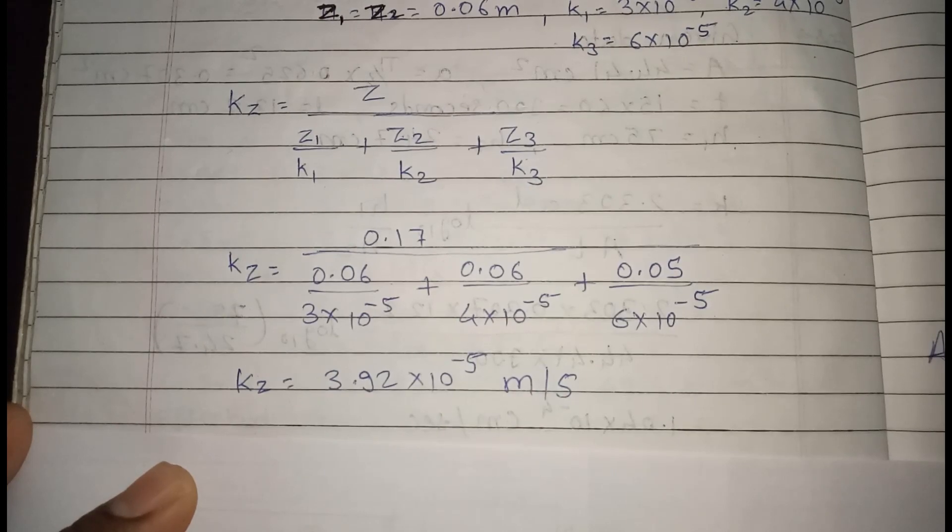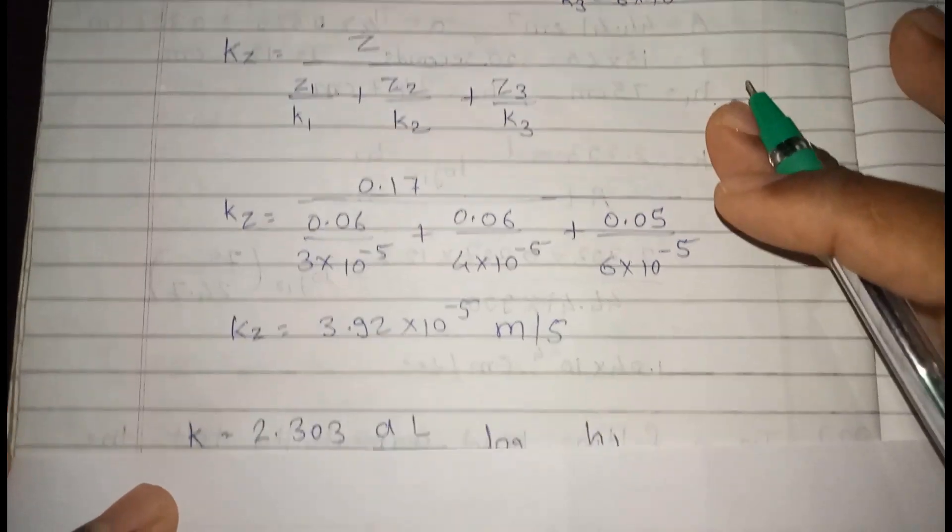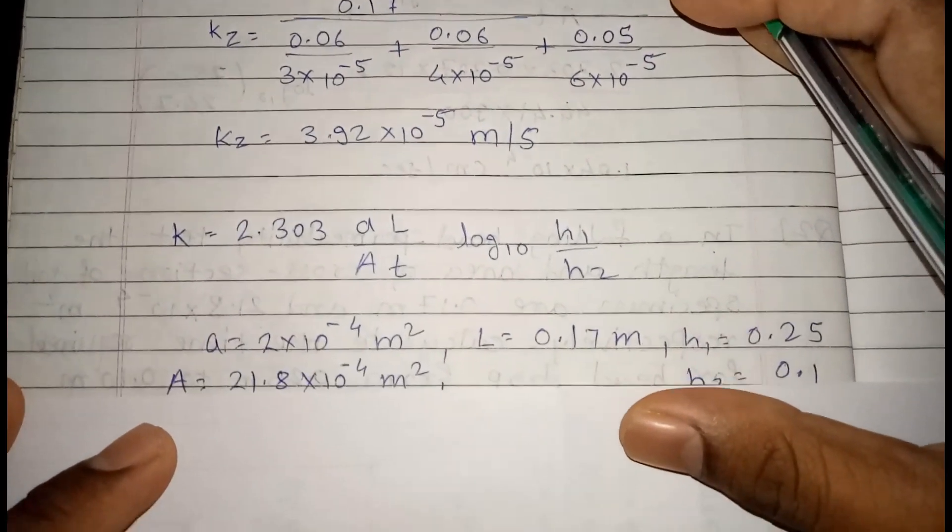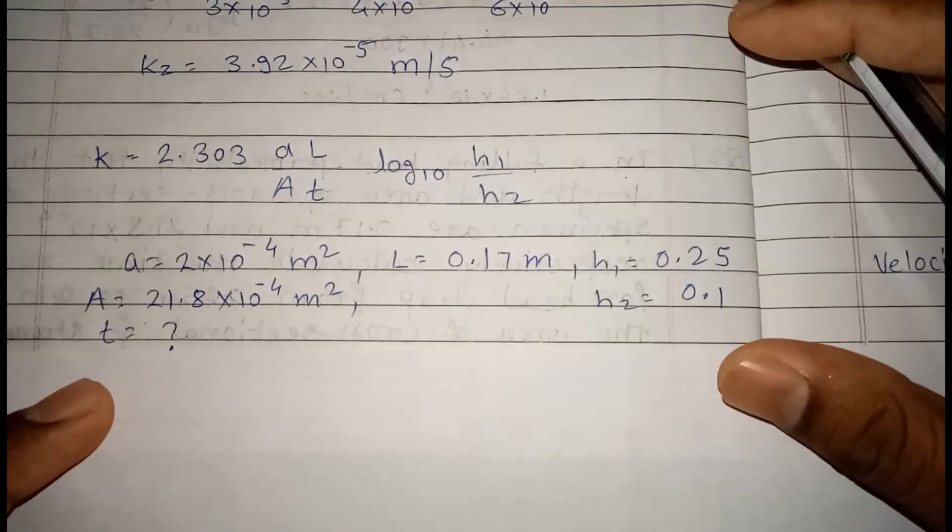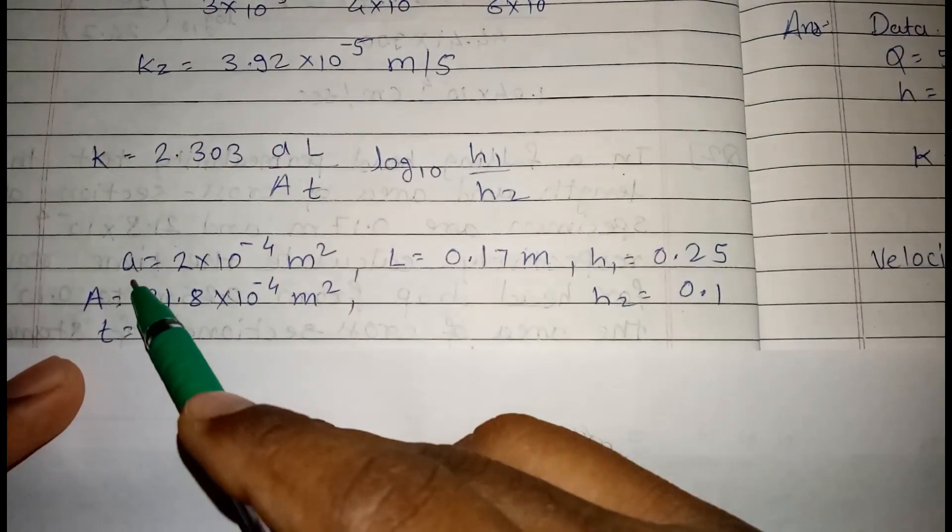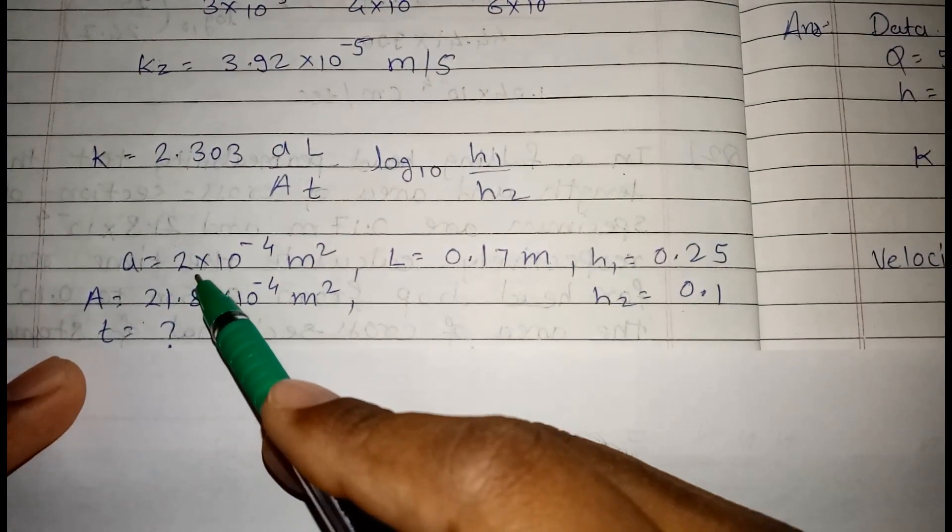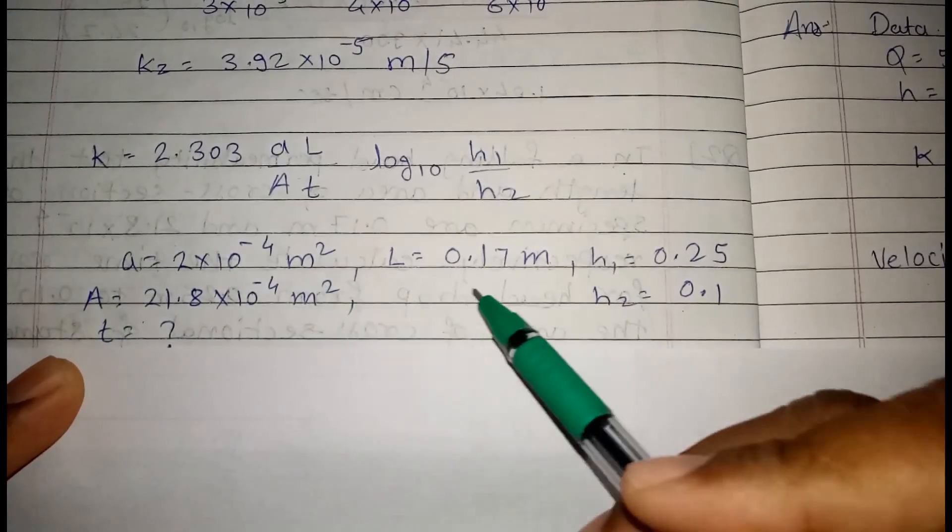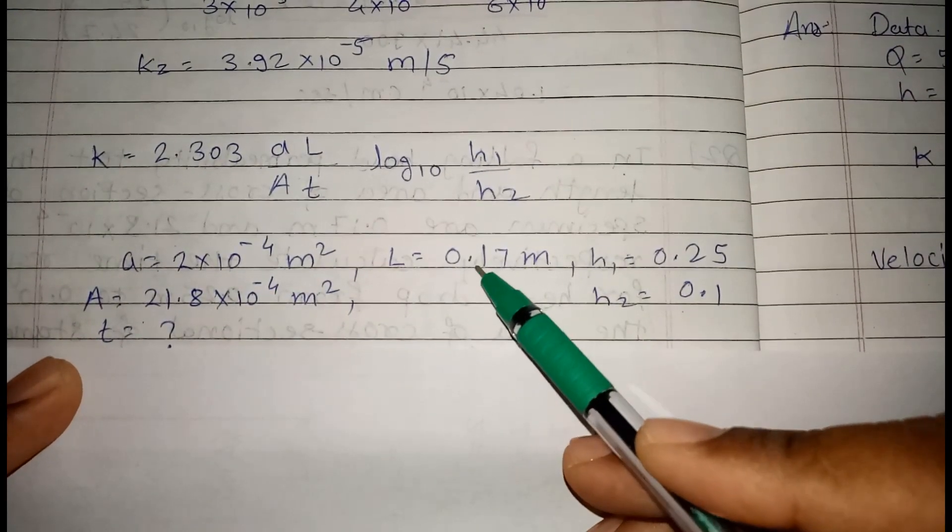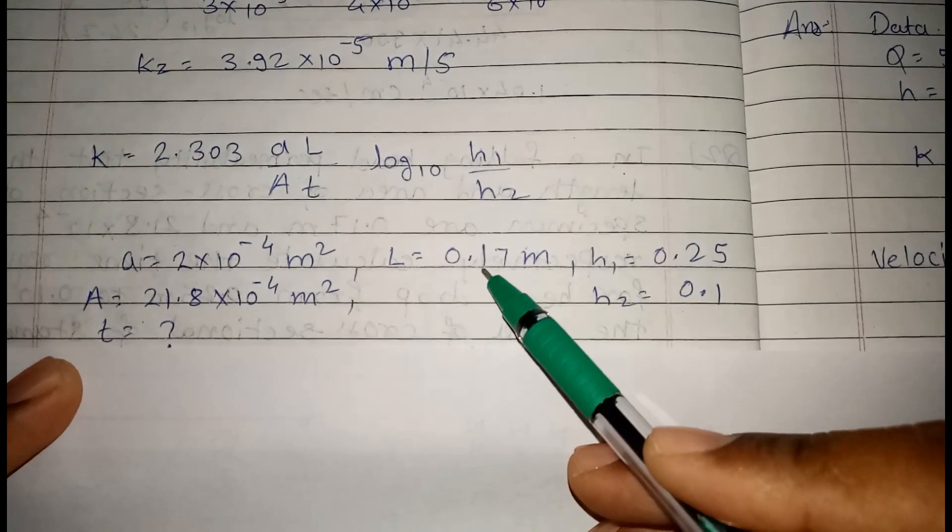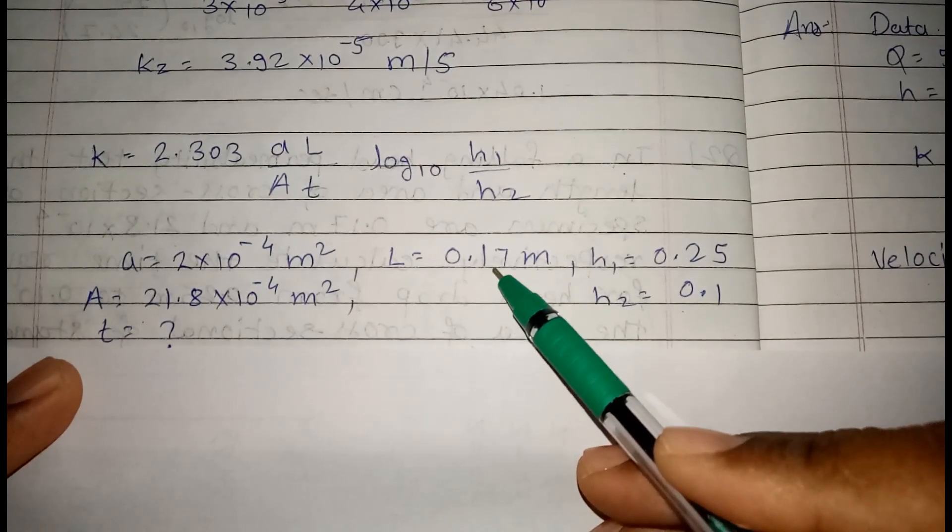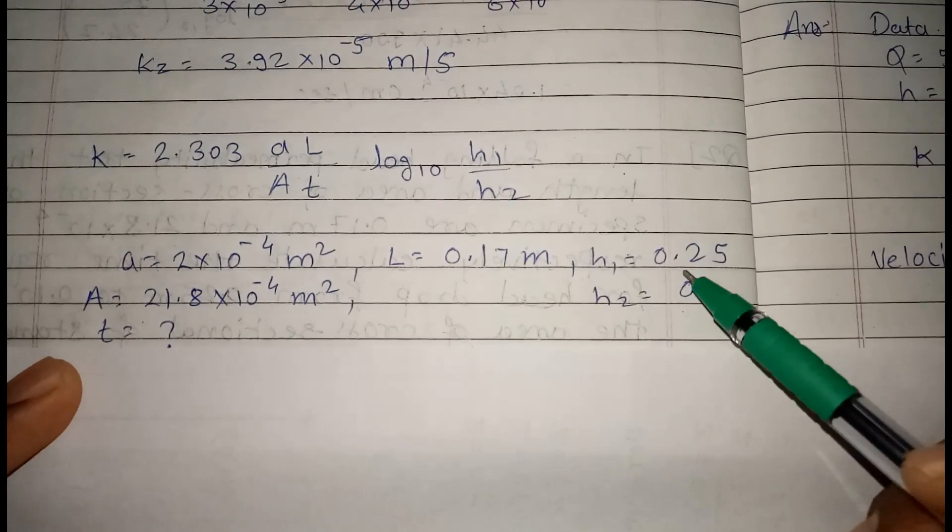Now, in falling head test, another data is given to us. That data is area of standpipe is 2 into 10 raise to minus 4 meter square. Length of the soil sample is 0.17 meter.